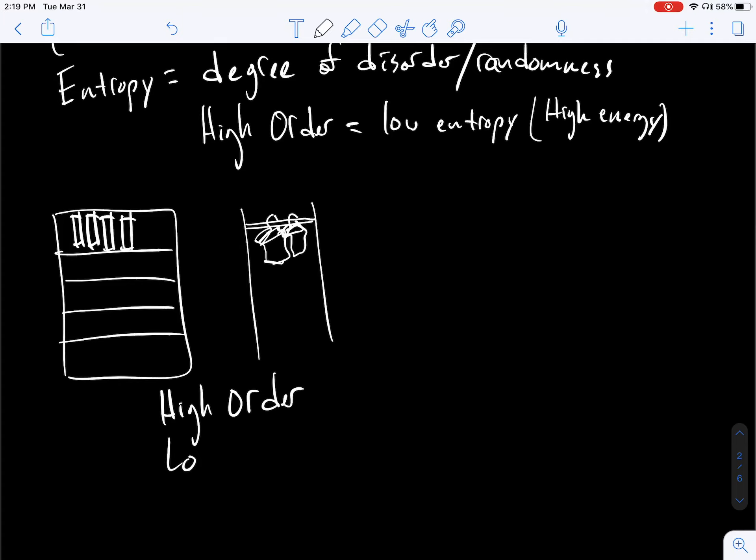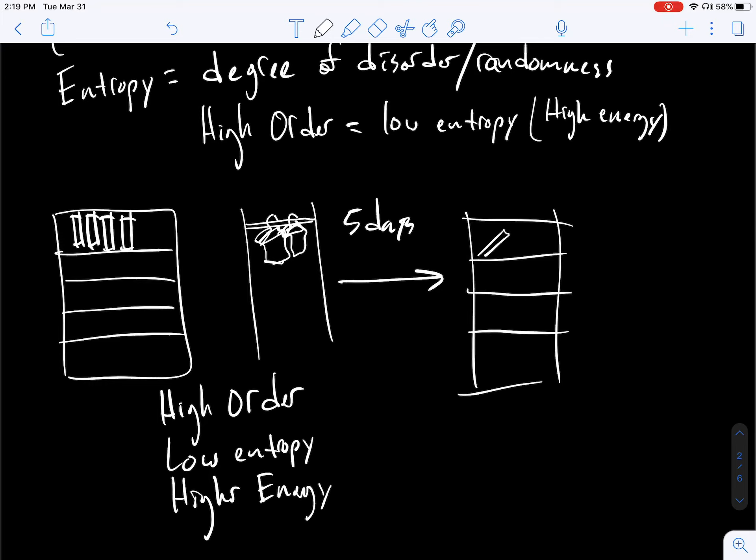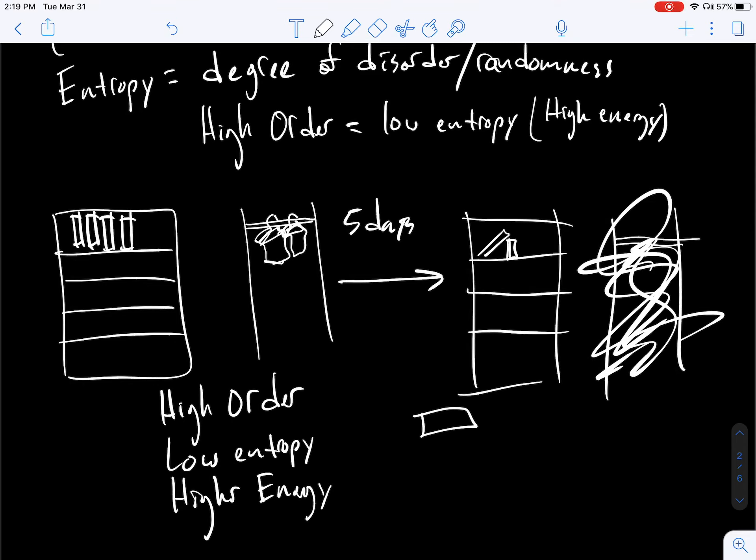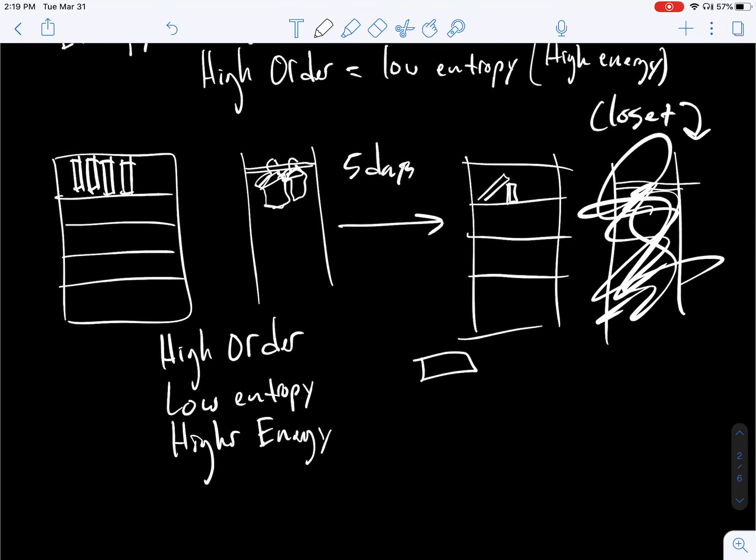This is high order, low entropy, higher energy state. What happens naturally, five days later without you really realizing it, you've got books fallen over, you've got books on the floor. Your closet basically looks like this. I mean, who knows what happened in there? You've got clothes all over the floor. Or for me, it's on the back of chairs, because apparently a chair is just what I use as a closet. It's pretty pathetic.